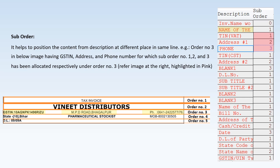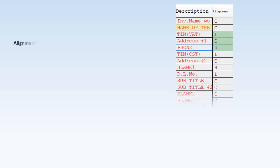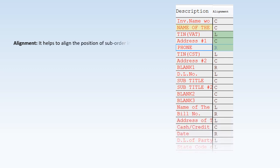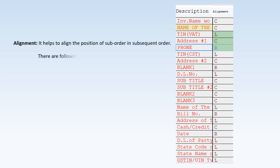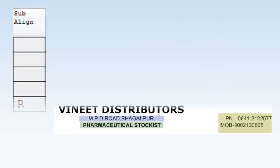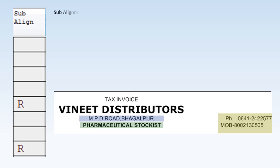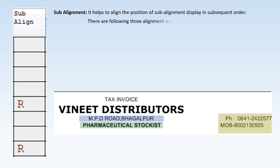After suborder, we move to the Alignment section of Value Soft bill format designing. Alignment helps to align the position of suborder content within its order. There are three alignment options: L (left), C (center), and R (right) — refer to the image highlighted in green. Sub-alignment is also important as it helps to align the position of sub-content within the subsequent order, and it also has three types: L (left), C (center), and R (right).